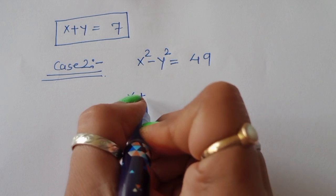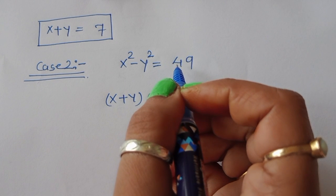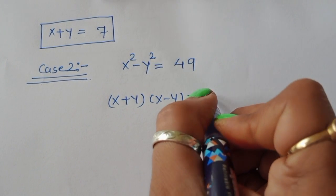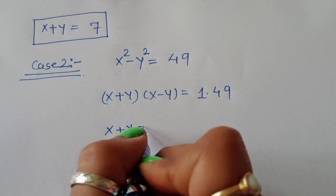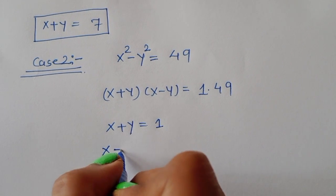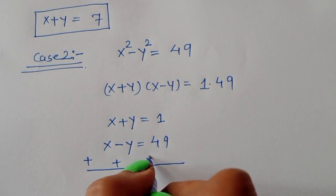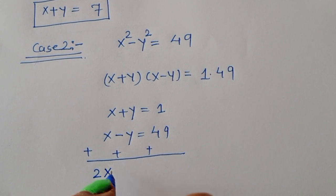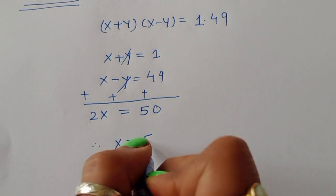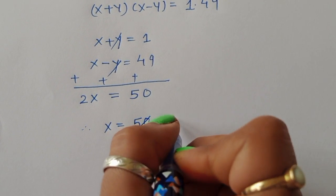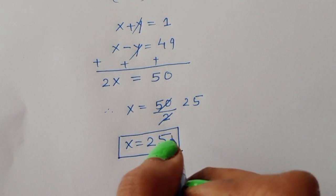Case 2: (x + y)(x - y) = 49, with the factor 1 × 49. Comparing LHS and RHS, we get two equations: x + y = 1 and x - y = 49. Adding these two equations: 2x = 49 + 1 = 50, therefore x = 50 ÷ 2 = 25.